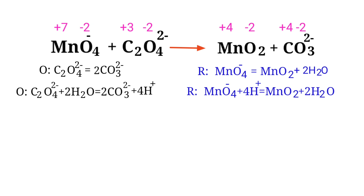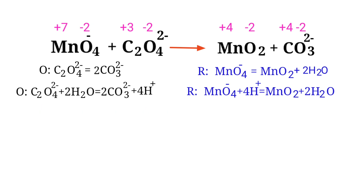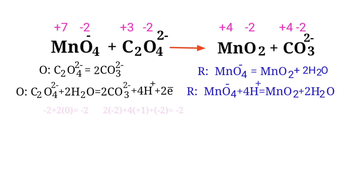For a redox reaction, the sum of charges must be equal on both sides. In the oxidation half reaction, both sides are not equal. To make them equal, you should add electrons — you cannot add protons. Adding two electrons to the right side makes it equal to minus two. Now the charges are balanced in the oxidation half reaction.